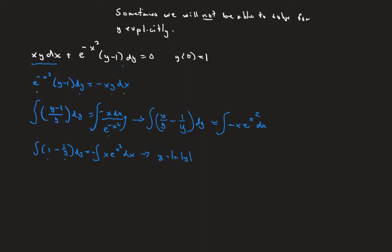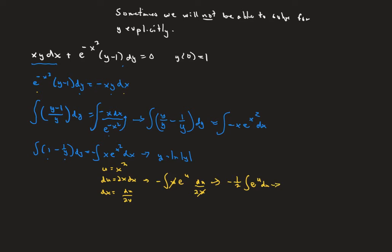On the right side, we'll need a u-substitution. If u = x², then du = 2x dx, so dx = du/(2x). That makes our integral: negative, times x, times e^u, times du/(2x). The x's cancel, and pulling the 2 out gives us negative one-half times the integral of e^u du. We know that equals negative one-half e^u, and substituting back, that's negative one-half e^(x²).